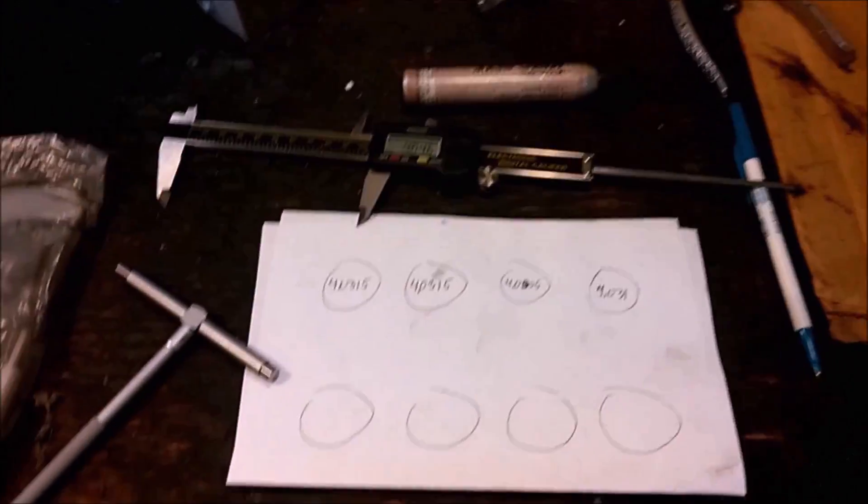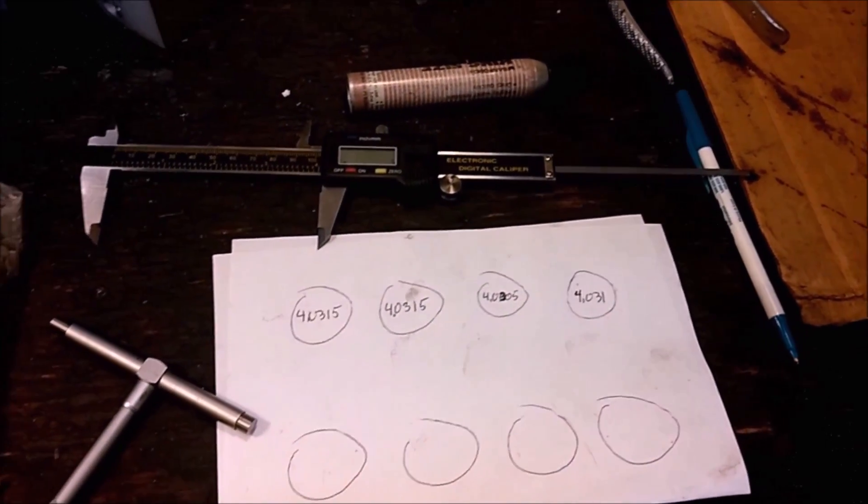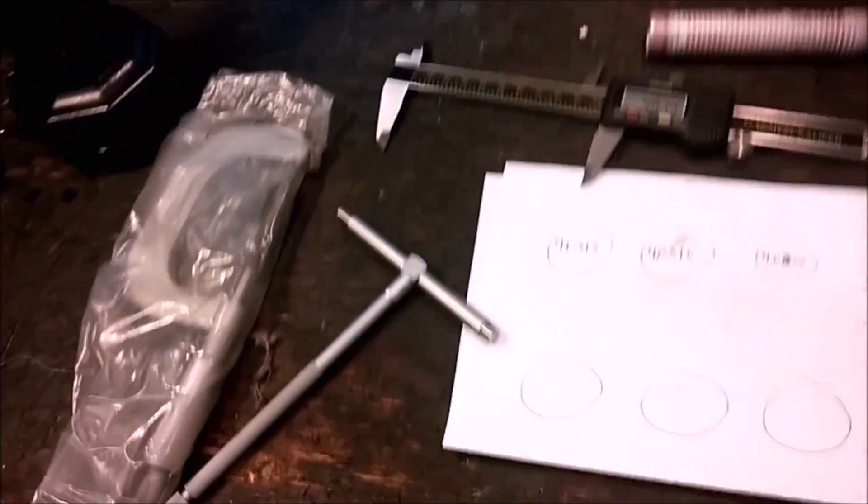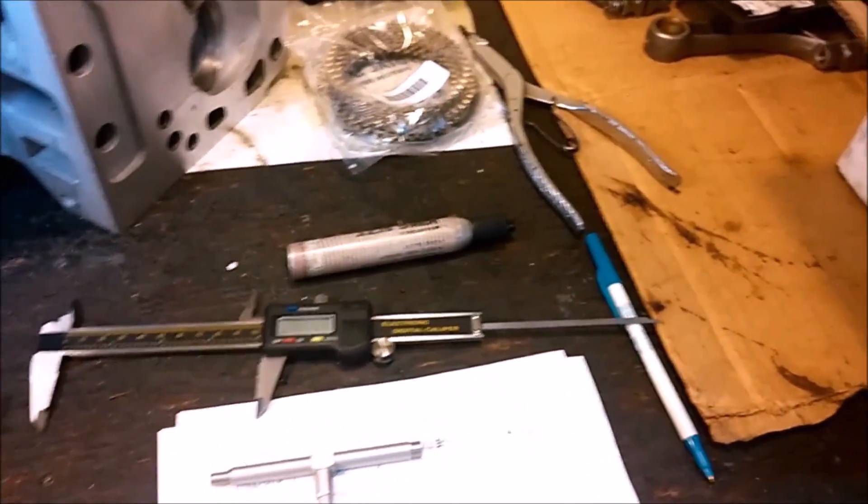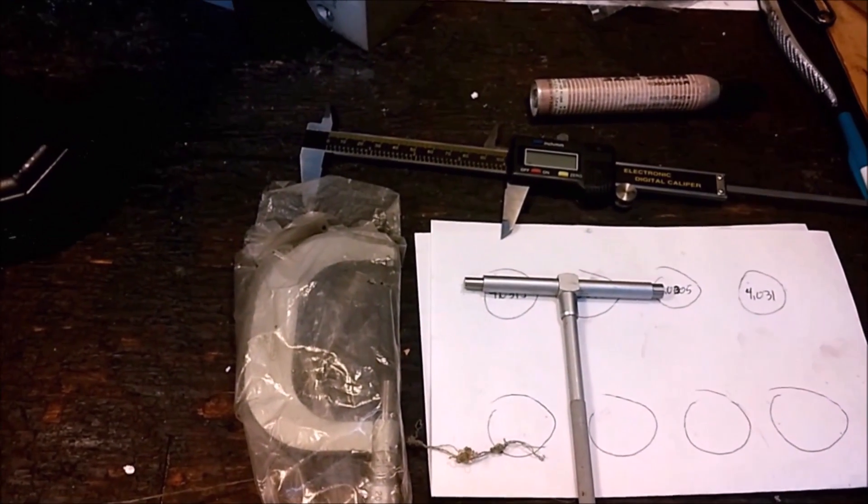The way we measure the bores is we draw out a sketch like this, and you can see I've already started. You can try and measure it directly with a vernier caliper. If you have snap gauges and a micrometer, this is a more accurate way of doing it.